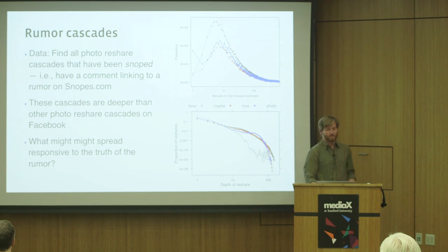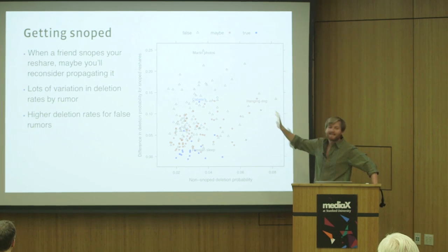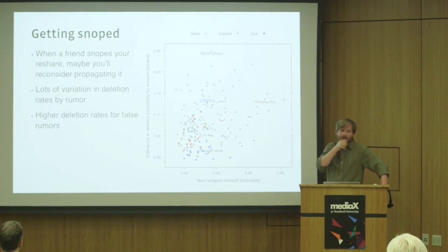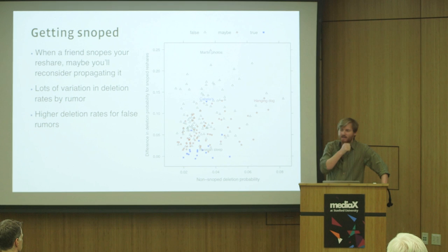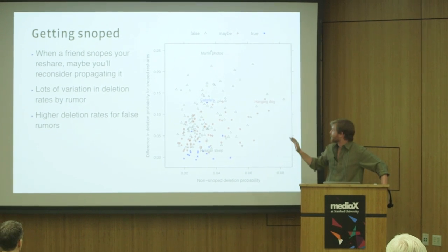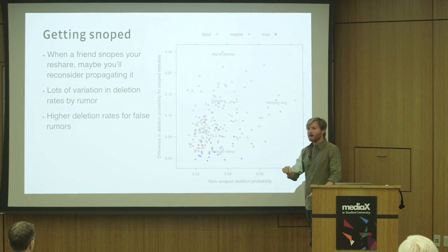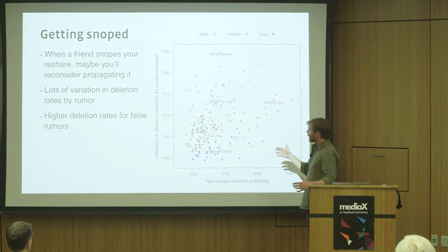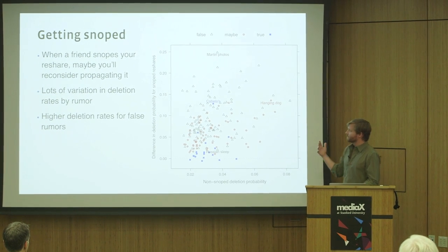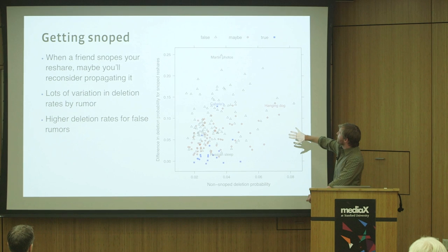Are there features of the network, especially the feedback processes on Facebook, just through social feedback, that could help true rumors continue to spread as false rumors are maybe abated a little bit by the injection of external information? One thought is that when your friend snopes your reshare, maybe you'll reconsider propagating it. Maybe after I've read that link they've posted, I'm not so confident that I want to attach my name to this and share it on to other people.